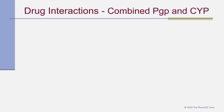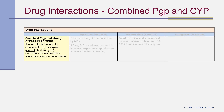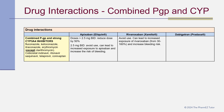Let's discuss DOAC interactions involving combined PGP transport and CYP enzyme systems. For combined PGP and strong CYP3A4 inhibitors — such as fluconazole, ketoconazole, itraconazole, erythromycin, cobicistat, indinavir, ritonavir, saquinavir, telaprevir, and conivaptan — when co-administered with apixaban at doses greater than 2.5 mg BID, reduce the apixaban dose by 50%. If the dose is 2.5 mg BID, avoid apixaban. Rivaroxaban should not be used in combination with these drugs, as increased exposure leads to an increased risk of bleeding.